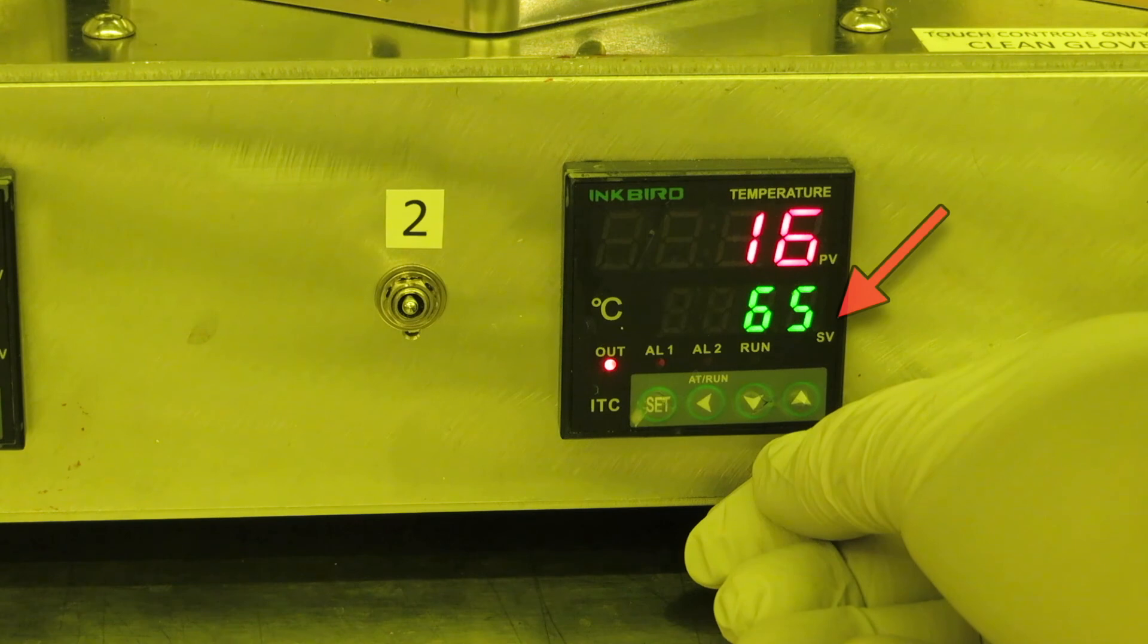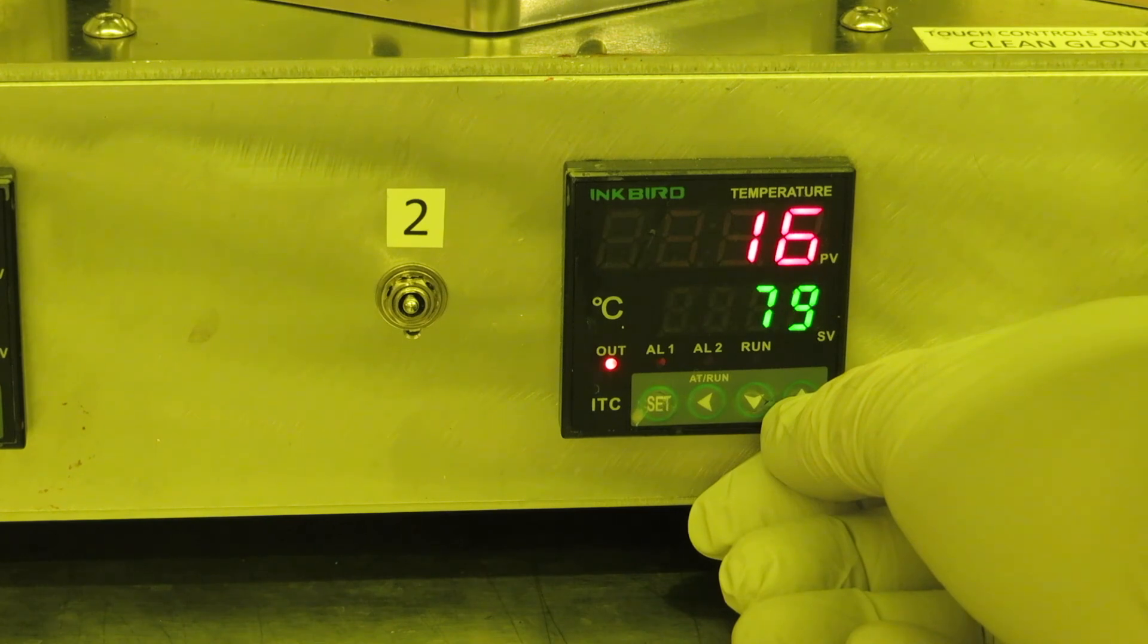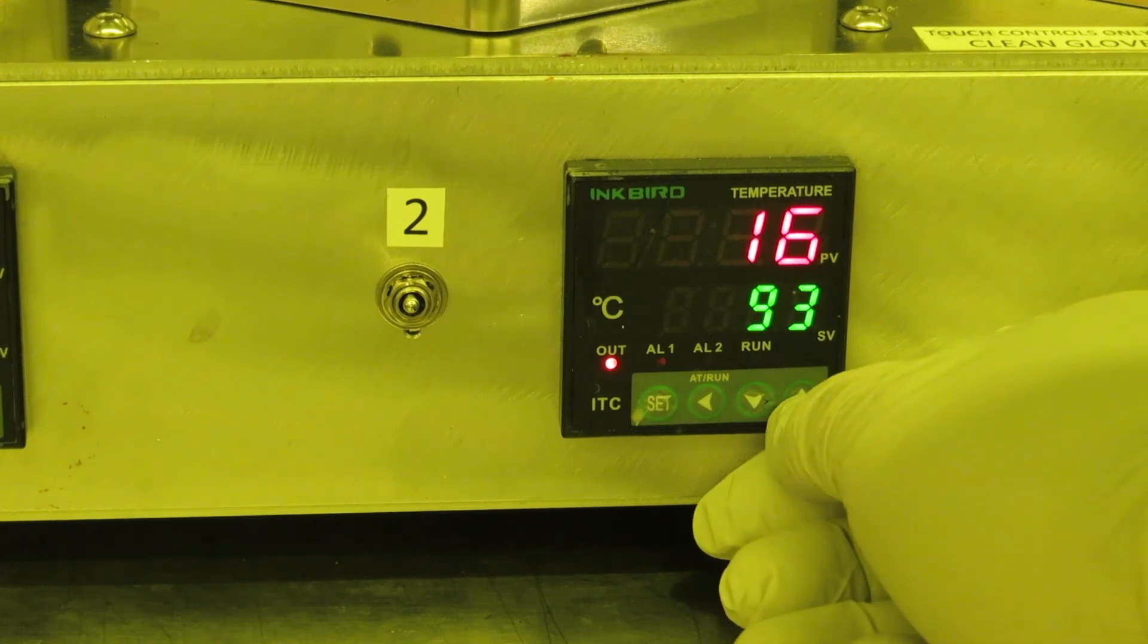To change the set point, push one of the up or down keys until you see the little blinking light, then use the up or down keys to set the temperature that you want. Make sure your gloves are clean and dry before touching any of these buttons. Also try not to touch the other two buttons or you may change some settings.